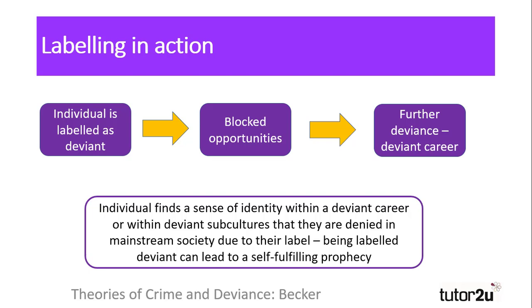This leaves the labelled individual with little option but to gravitate towards others who have been labelled negatively, and towards a deviant career. As the individual is marginalised by mainstream society, they identify with others with deviant careers, and this gives them a sense of their own identity. The result is further deviance and a self-fulfilling prophecy of criminality based upon the initial label of thief.